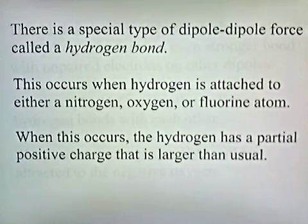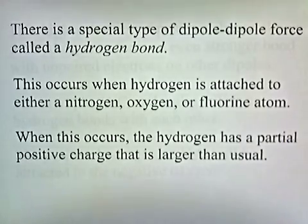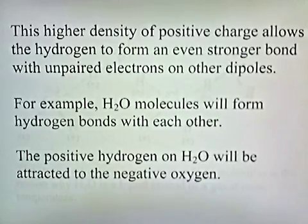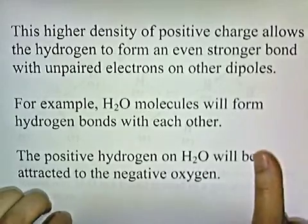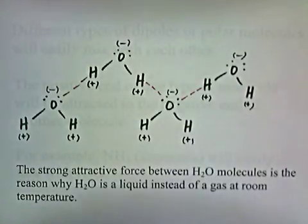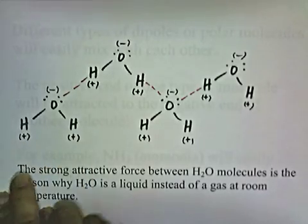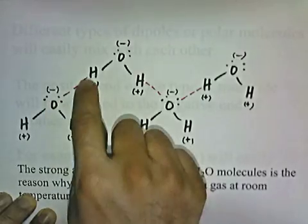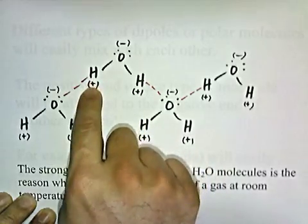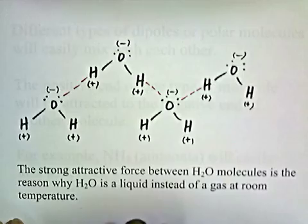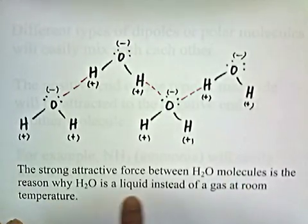There's a special type of dipole-dipole force called a hydrogen bond. This occurs when hydrogen is attached to either a nitrogen, oxygen, or fluorine atom. When this occurs, the hydrogen has a partial positive charge that is larger than usual, and this higher density of positive charge allows the hydrogen to form an even stronger bond with unpaired electrons on other dipoles. For example, H2O molecules will form hydrogen bonds with each other. The positive hydrogen on H2O will be attracted to the negative oxygen. Water has a bent shape, so the top where the oxygen is will be negative and the bottom where the hydrogens are will be positive. This strong attractive force between H2O molecules is why H2O is a liquid instead of a gas at room temperature.